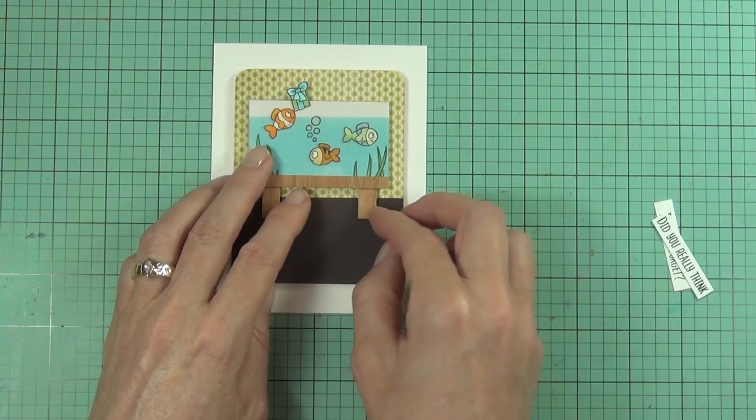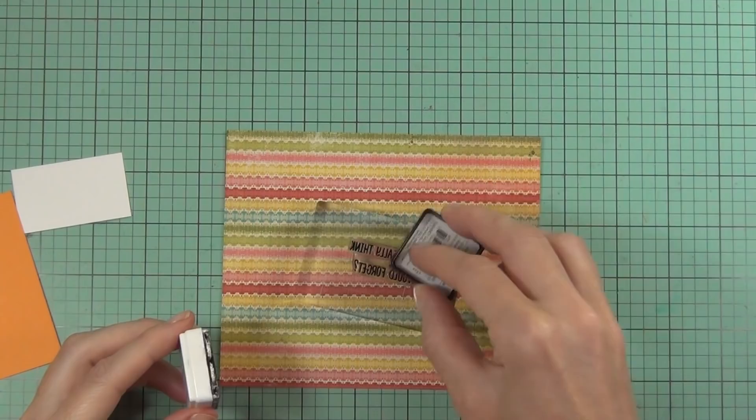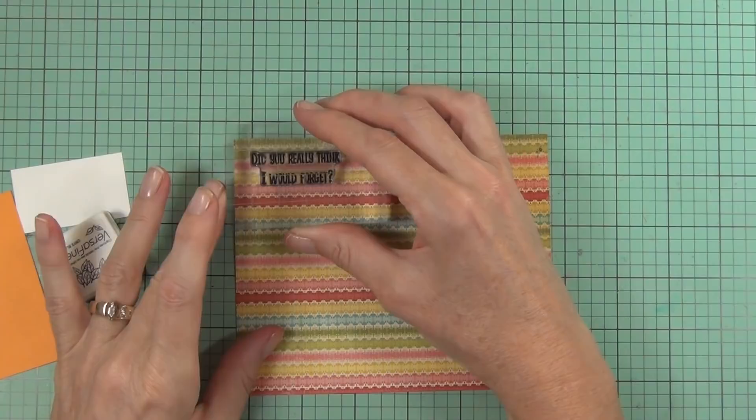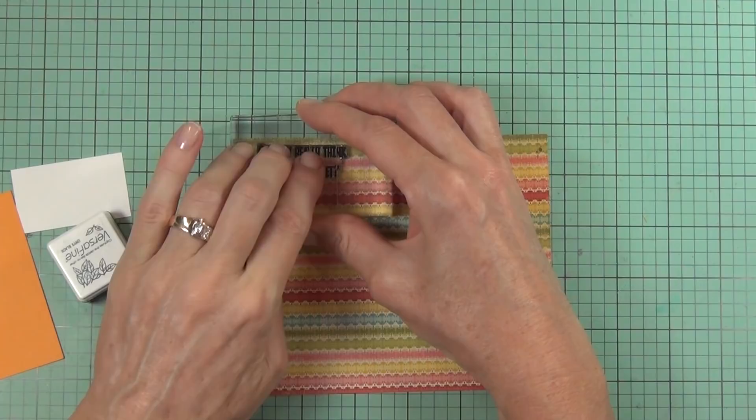Because what I decided to do—and this is what I originally wanted to do, I just didn't know how I was going to do it—I wanted to create a mat for my scene and the other sentiment just wasn't working for me. So I'm stamping that. It's from the Moody Unicorns set.